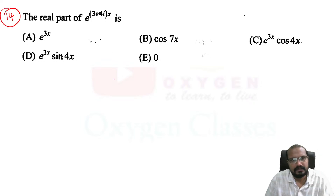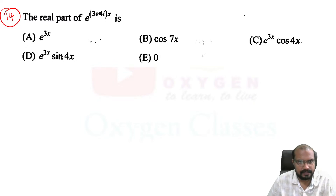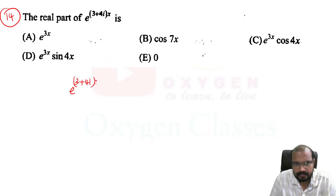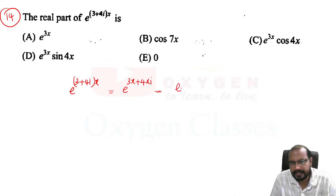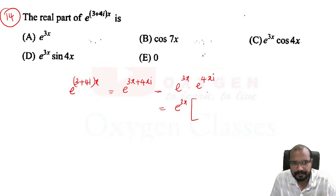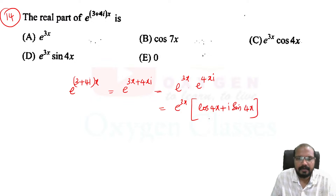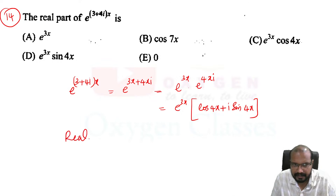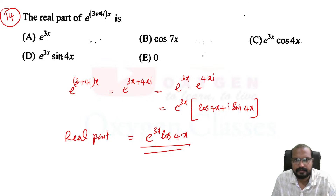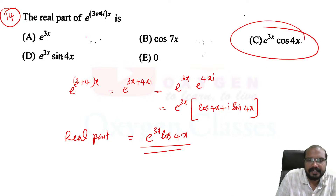The next problem asks for the real part of e raised to (3 + 4i)x. This equals e raised to 3x multiplied by e raised to 4ix. The real part of that is e raised to 3x times cos(4x). Option c is correct.